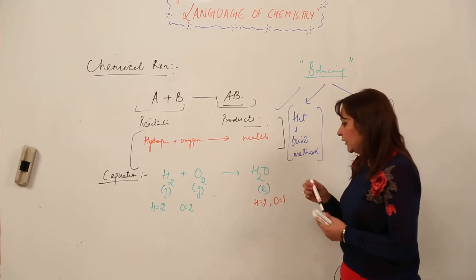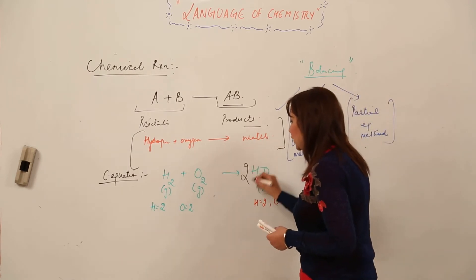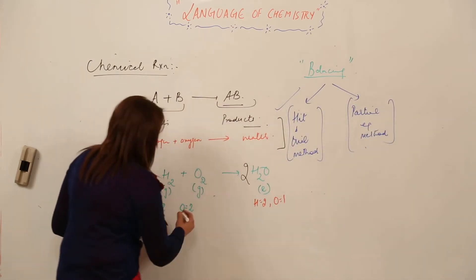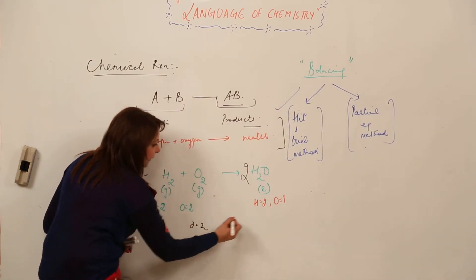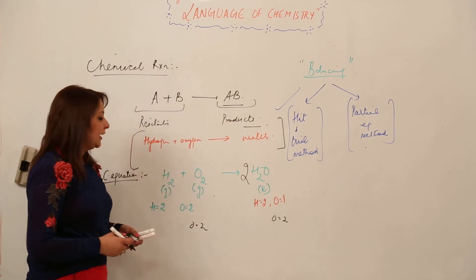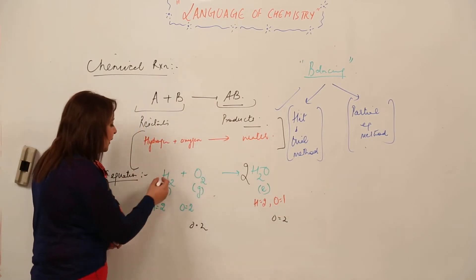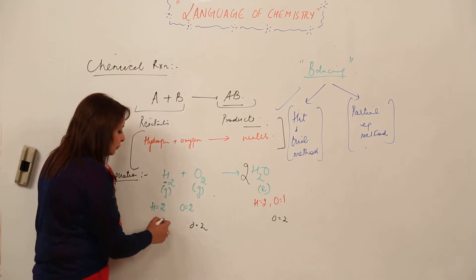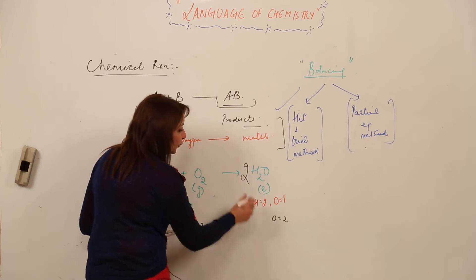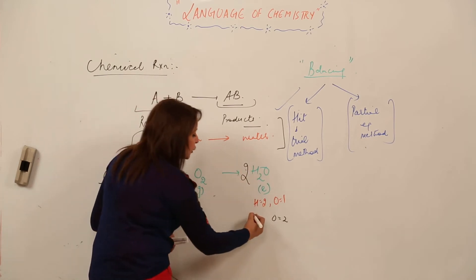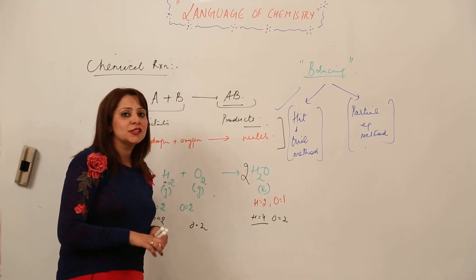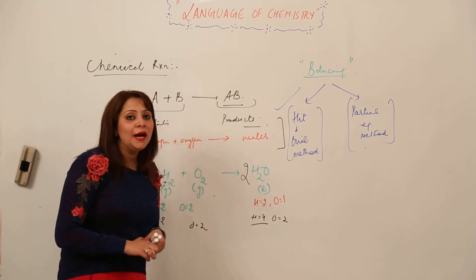Now oxygen is 2 on both sides. But let me check hydrogen: on the left there are 2 hydrogens, but on the right side 2 and 2, that means 4. While balancing oxygen, the hydrogen became unbalanced.